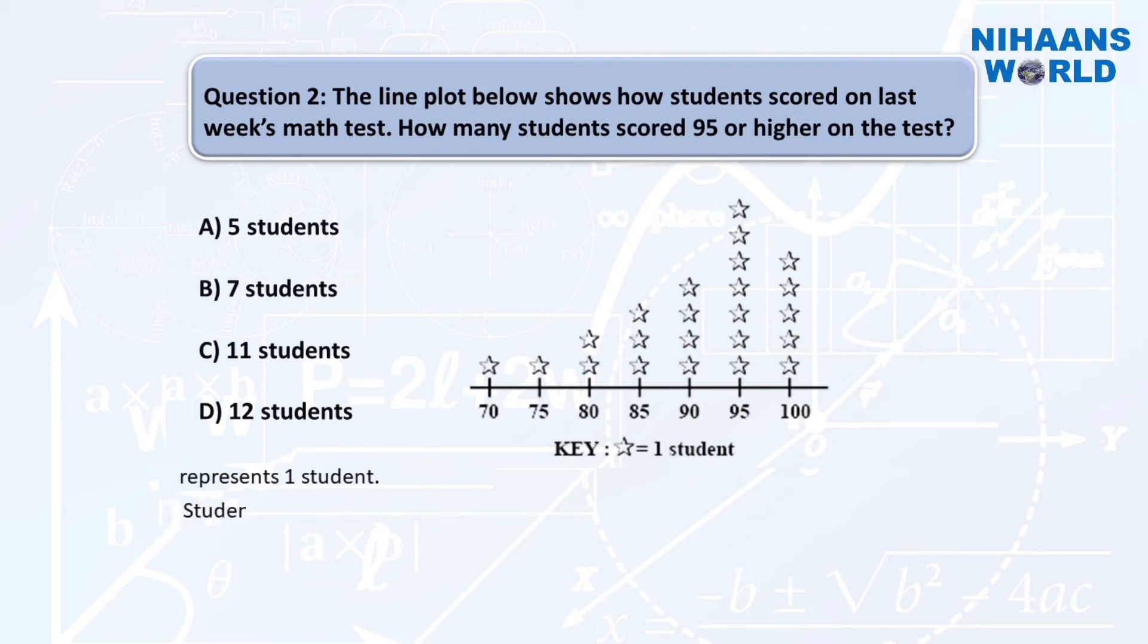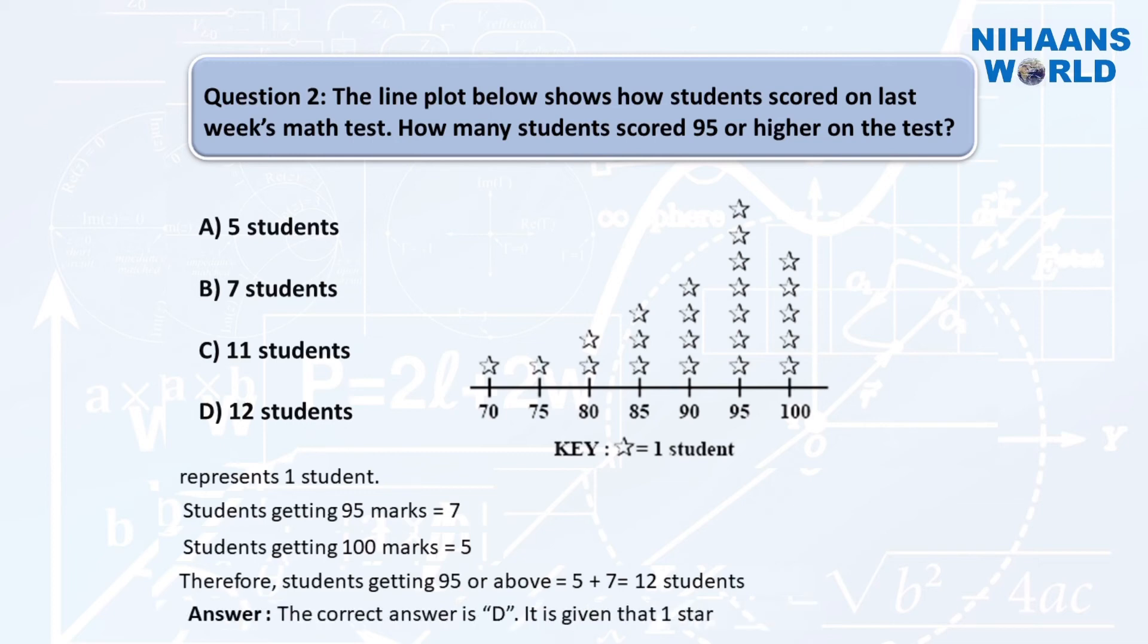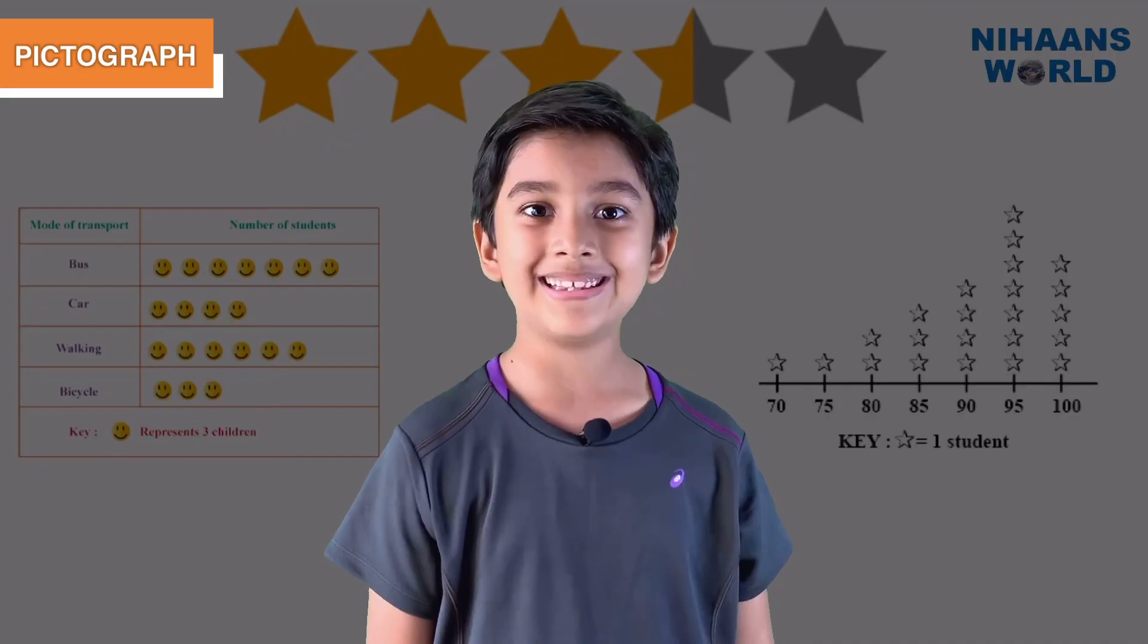We know that one star represents one student. Students getting 95 marks equals 7. Students getting 100 marks equals 5. Therefore, students getting 95 or above equals 5 plus 7 equals 12 students. The correct answer is D.